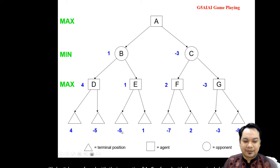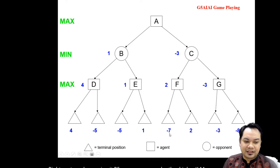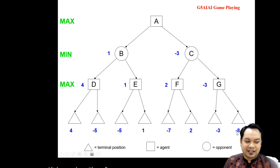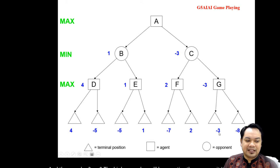Next, you have negative 5 and 1 — the higher value is 1. Then you have negative 7 and 2 — the higher number is 2. And then negative 3 and negative 8 — the higher number is negative 3. Negative 8 has a lower value compared to negative 3, so negative 3 has the higher value.